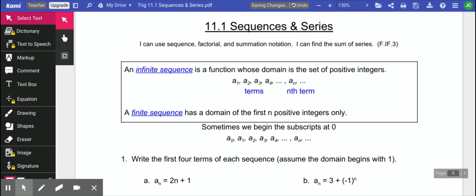And the terms of an infinite sequence, we start with a1, that's our first term. Our second term is a2, our third term is a3, and so on and so forth. And then the nth term is just some term somewhere along the line. It could be the hundredth or the thousandth or whatever. So the nth term.